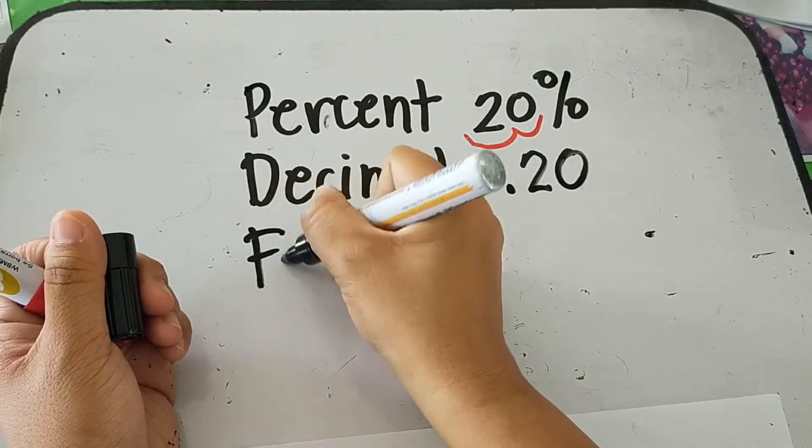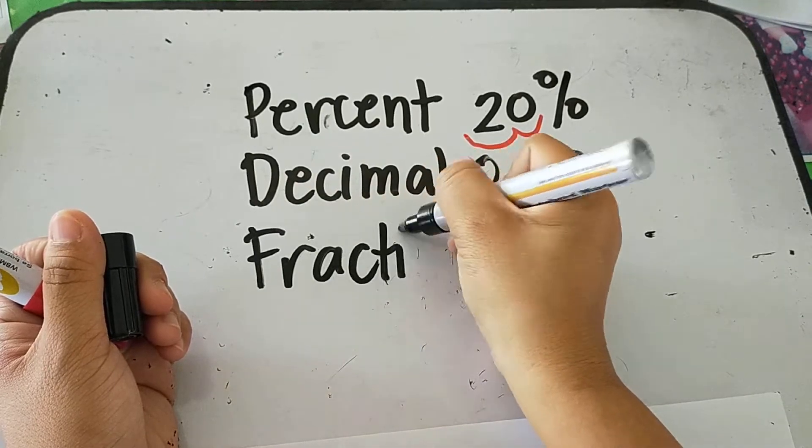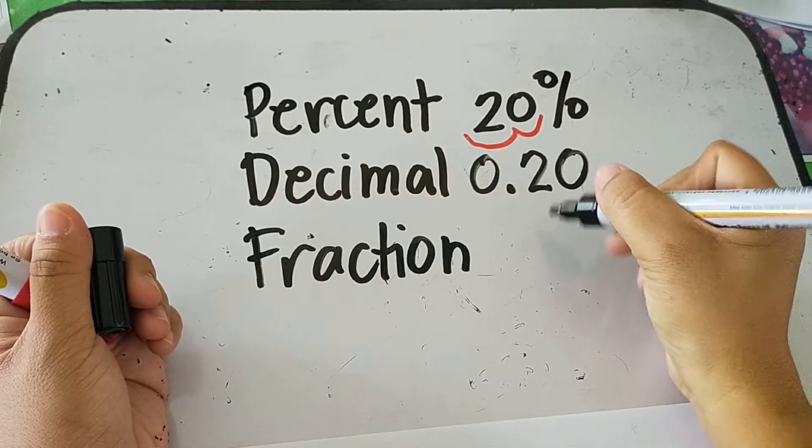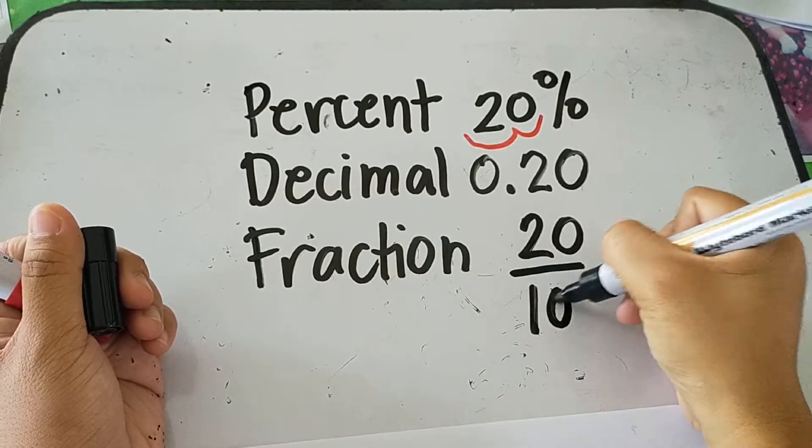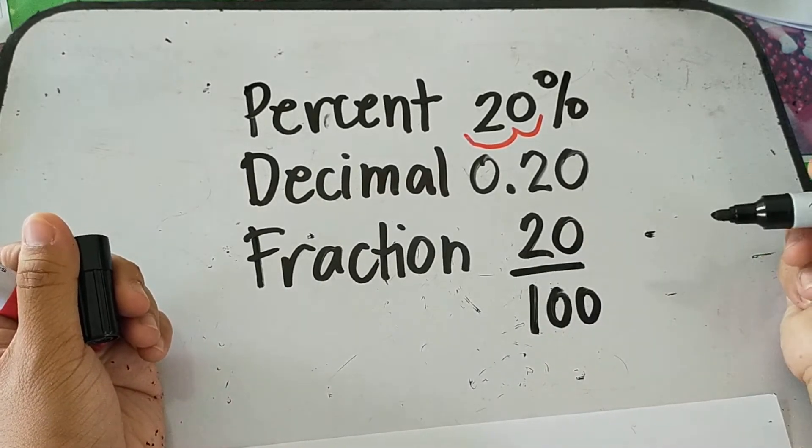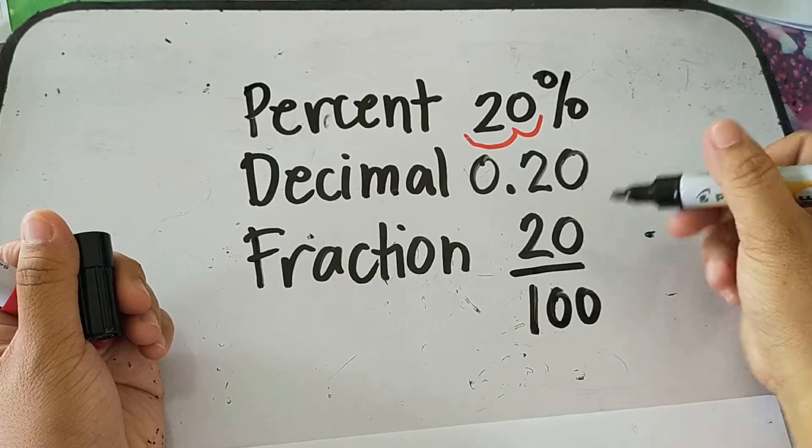So how about in fraction form? So in fraction form, this is written as 20 over 100. But you have to reduce this into lowest term.